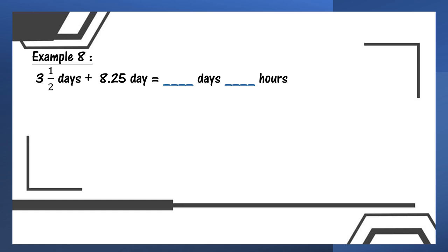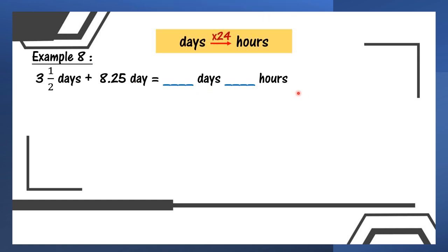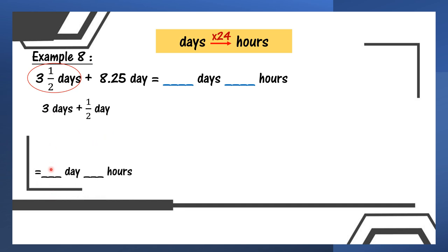Example 8: days plus days, answer also in days and hours. Both numbers need to be changed — dua-dua pun kena tukar kepada bentuk days and hours. I start with 3 and 1/2 days — separate it: 3 days plus 1/2 days. Write down 3. Then convert 1/2 days times 24: divide by 2; 24 divide by 2 is 12. So 1 times 12, I get 12 hours.